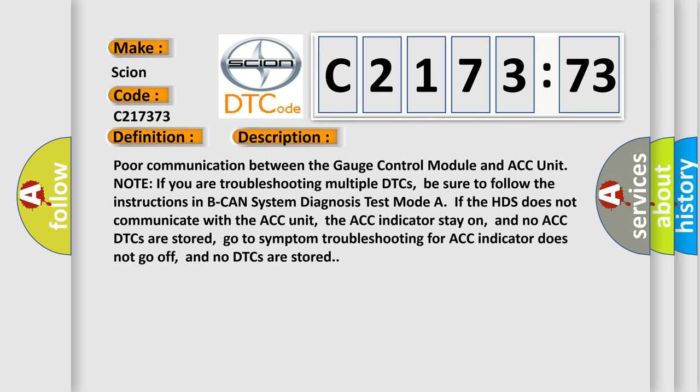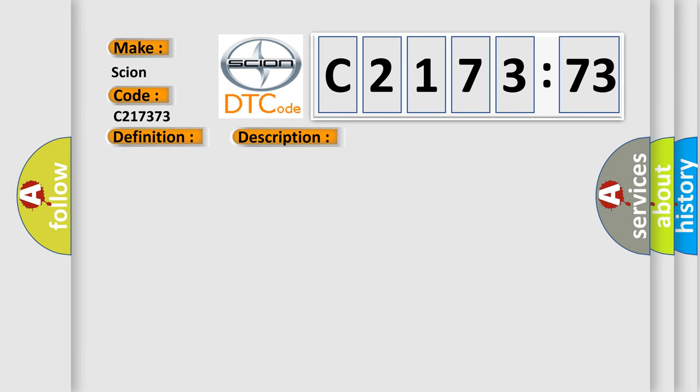And now this is a short description of this DTC code. Poor communication between the gauge control module and ACC unit. Note: if you are troubleshooting multiple DTCs, be sure to follow the instructions in Peak Hand System Diagnosis Test Mode. If the HDS does not communicate with the ACC unit, the ACC indicator stays on, and no ACC DTCs are stored, go to symptom troubleshooting for ACC indicator does not go off and no DTCs are stored.